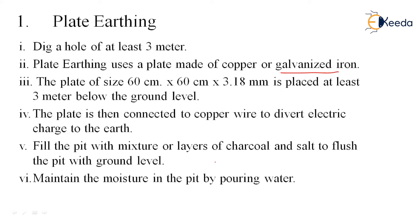First, place the copper plate or galvanized plate at the bottom of the 3-meter deep pit, then connect it with the copper wire. Take out the copper wire up to the earth level. Fill the remaining pit with alternate layers of charcoal and salt up to the level. To maintain moisture in the pit, pour water, because we want minimum resistance to the flow of current. As there is minimum resistance, there will be maximum flow of current — resistance and current flow are inversely proportional.